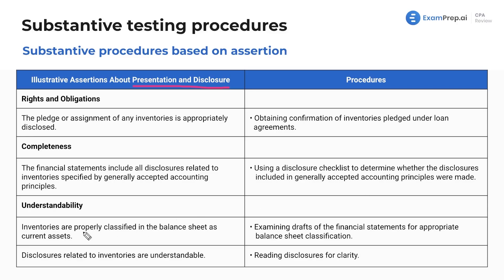What about understandability? Inventories are properly classified in the balance sheet as current assets — that's obviously a big one since inventory is a current asset. You're going to examine drafts of the financial statements for appropriate balance sheet classification. And lastly, disclosures related to inventories are understandable — you're going to read disclosures for clarity, making sure a reasonable user of the financial statements can pick them up and understand what's going on.